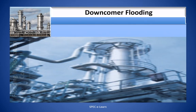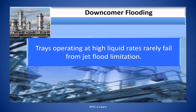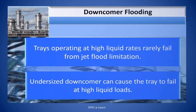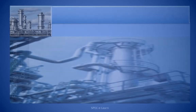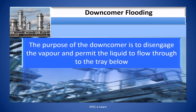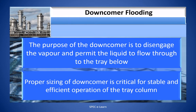In downcomers, trays operating at high liquid rates rarely fail from jet flooding limitation. An undersized downcomer can cause the tray to fail at high liquid loads. The purpose of the downcomer is to disengage the vapor and permit the liquid to flow through to the tray below. Proper sizing of the downcomer is critical for stable and efficient operation of the tray column.